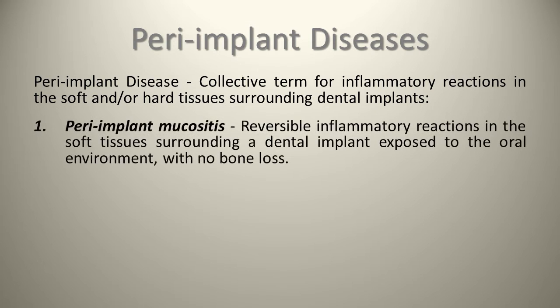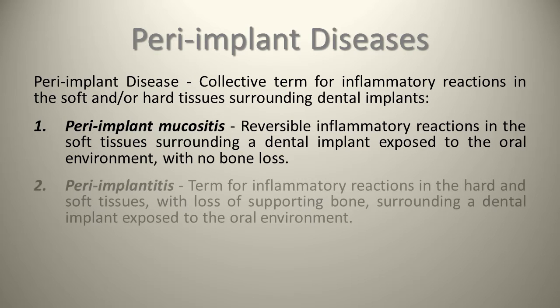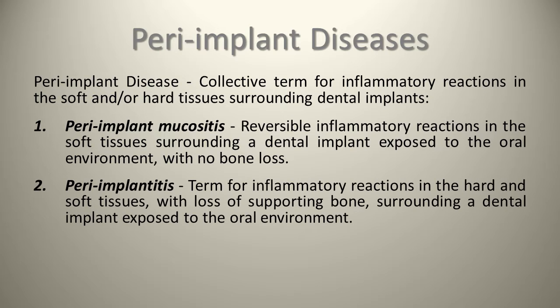There are two types of diseases to discuss. First, peri-implant mucositis — a reversible inflammatory reaction in the soft tissues surrounding a dental implant exposed to the oral environment, with no bone loss. Second, peri-implantitis — inflammatory reactions in the hard and soft tissue with loss of supporting bone surrounding a dental implant exposed to the oral environment.